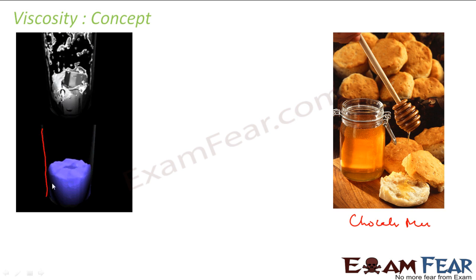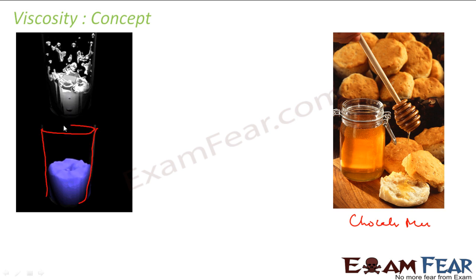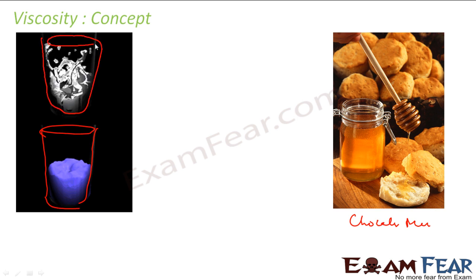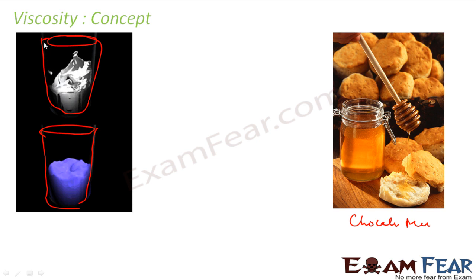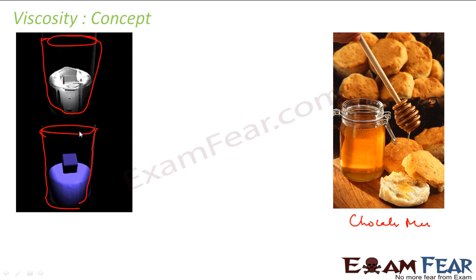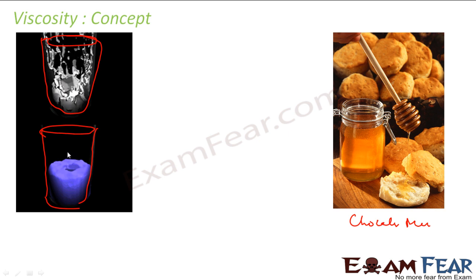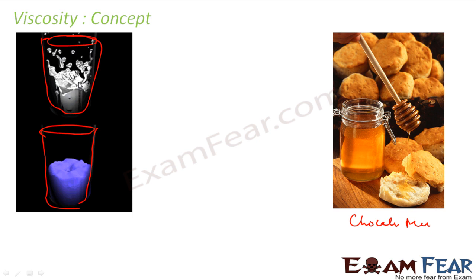Let me draw the glasses clearly for reference. In the lower viscosity case — water — when I drop an ice cube, the water splashes out. But in the higher viscosity case — honey — nothing happens, it doesn't even splash. The viscosity is different. You must have seen this in the kitchen too.